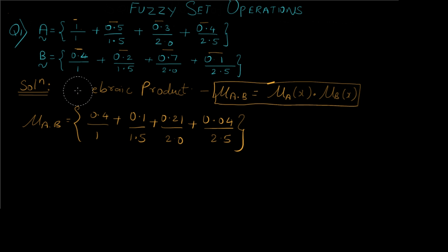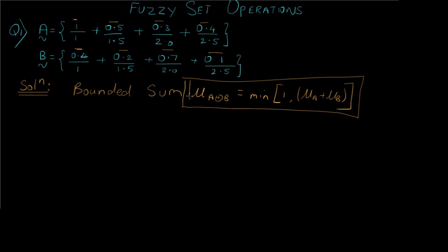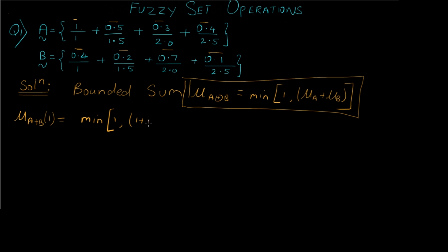Now let's see what bounded sum is. The formula for bounded sum says we take the addition of the numerators and compare it with 1, then take the minimum of the two. For the first case, we take the minimum of 1 and (1 + 0.4) = minimum of 1 and 1.4, which is 1.